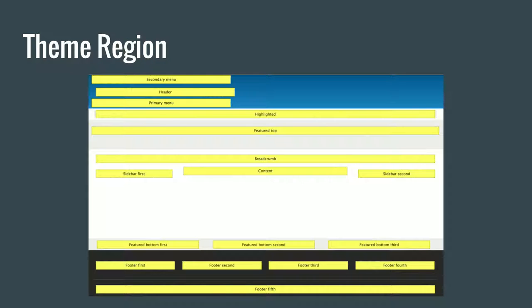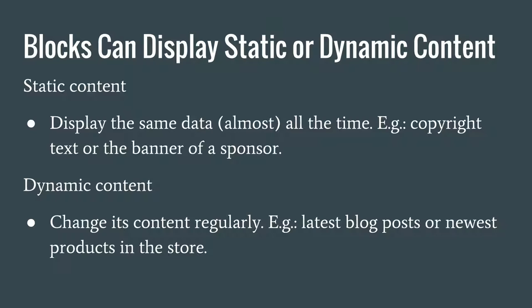Blocks can be either static or dynamic. A static block is one whose content remains the same — like a footer with 'copyright 2016' that changes once a year, or a sponsor banner. But we can also have dynamic content — for example, the latest blog post, which updates every day. If you're selling products with new items every week, that block changes every week. Depending on how often the content changes, a block can be either static or dynamic.